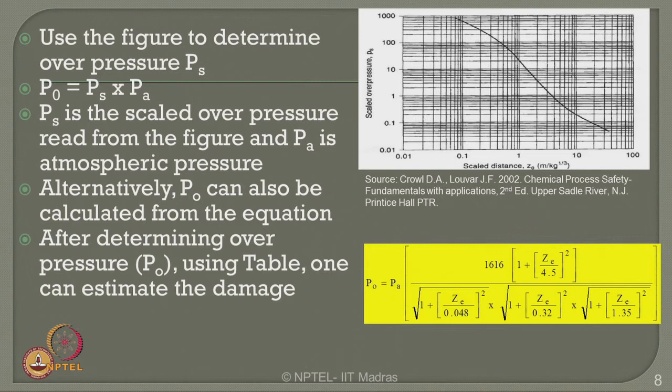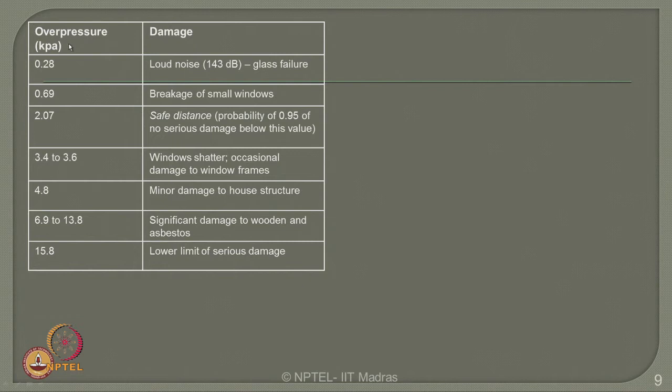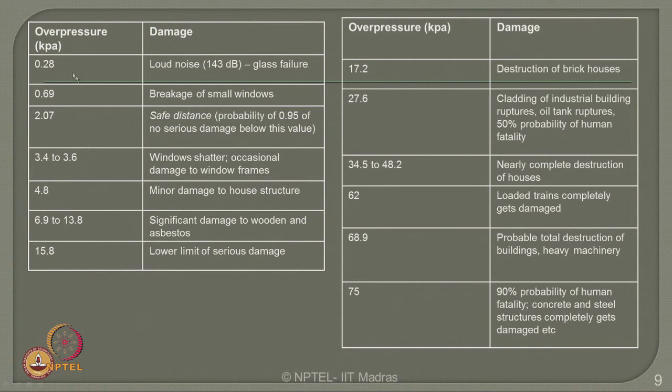After determining the overpressure using the table, one can estimate the damage cost. The table shows that for a given overpressure value in kilopascals, the equivalent damage is available in the literature. The equivalent overpressure varies from 0.28 to as high as 75 kPa, with effects ranging from a simple loud noise causing glass breakage (equivalent to 143 decibels) to as high as 90 percent probability of human fatality at 75 kPa.